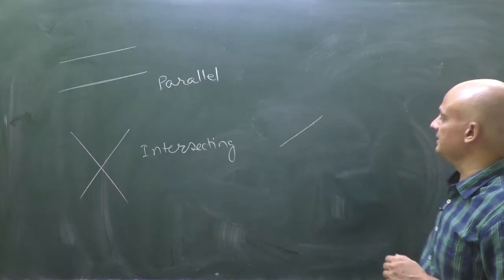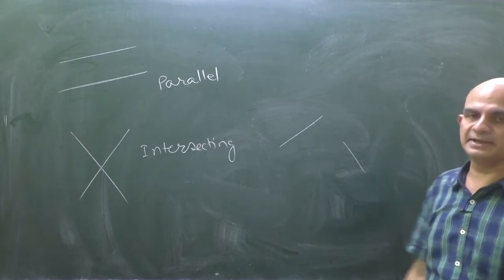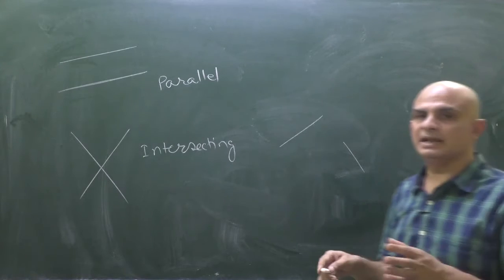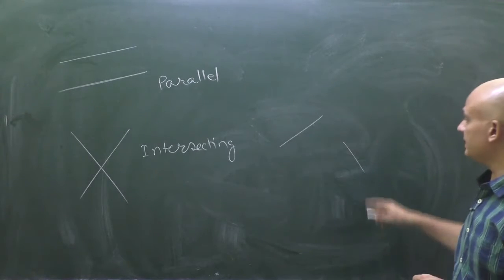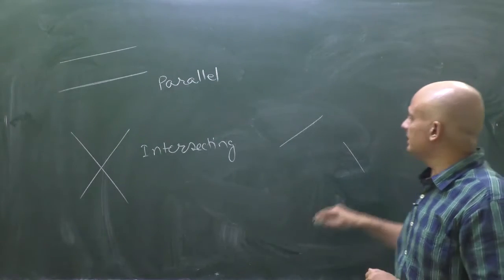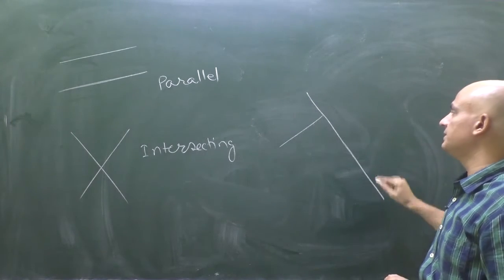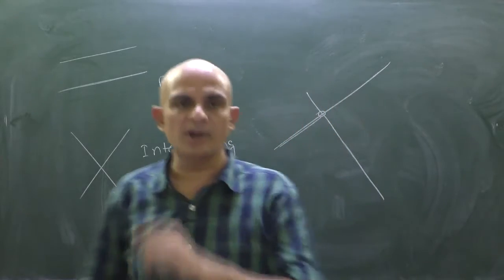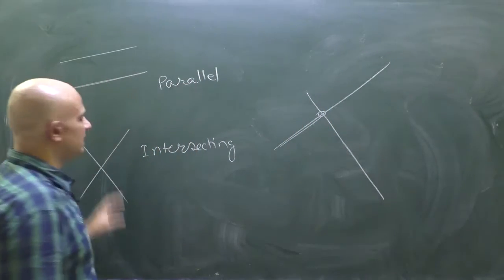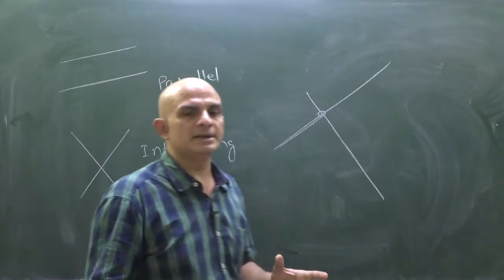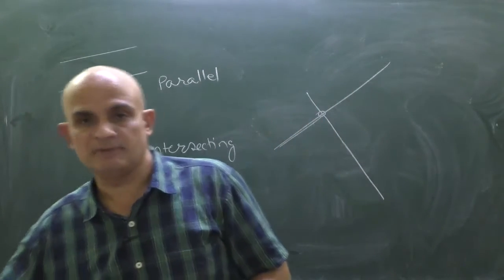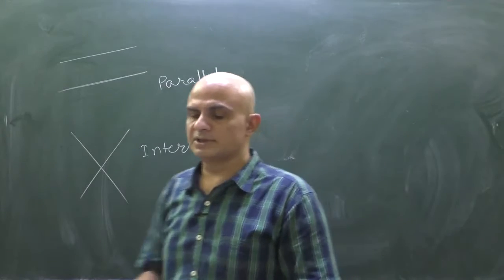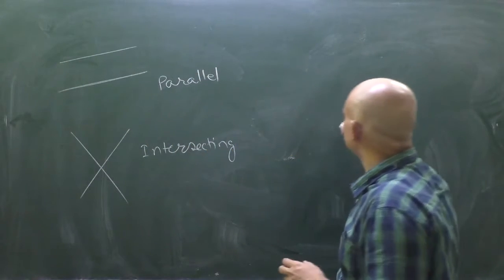As I told you in the last video, a line has infinite length. A line segment is not a line. Since lines have infinite length, if two lines are not parallel, they will definitely be intersecting each other at some point.